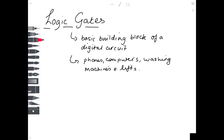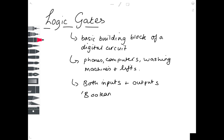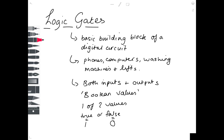Logic gates have both inputs and outputs — you put stuff into them and get stuff out. We call these Boolean values. The crucial thing is that the inputs and outputs can only have one of two values, which we assign as either true or false, or one or zero — and these are equivalent. Within an electrical circuit, true or one means that a current would flow; false or zero means it wouldn't flow and the device wouldn't work.